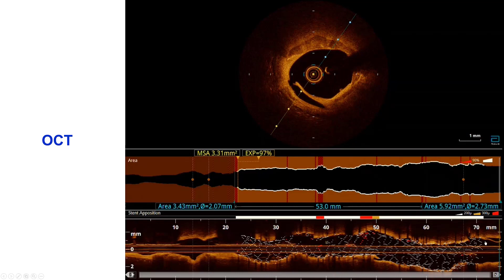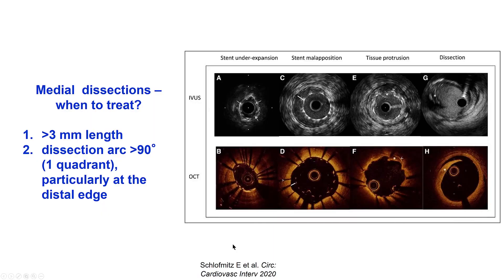There is a significant dissection that is important to cover, especially at the distal edge. When should medial dissection be treated? Not always — but if it is more than 3 mm in length and involves more than one quadrant (more than 90 degrees arc), then it should be treated. Both the proximal and distal dissections in our case fulfill this criteria.